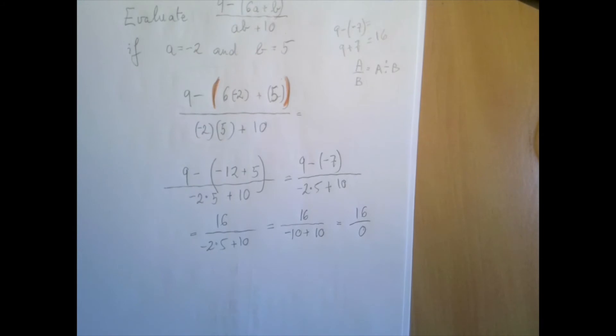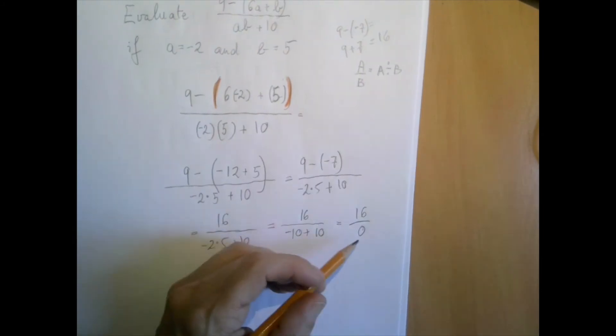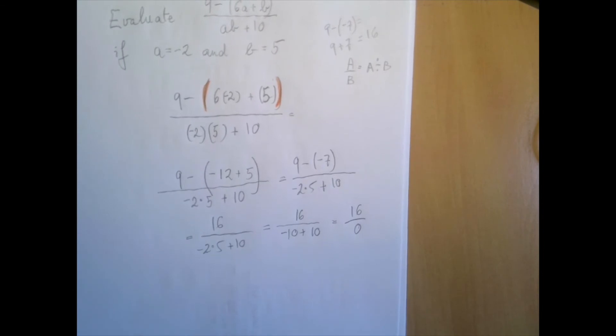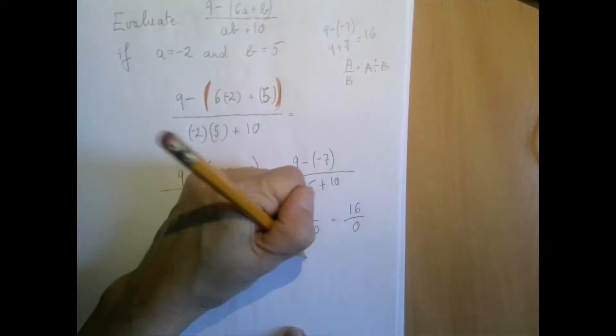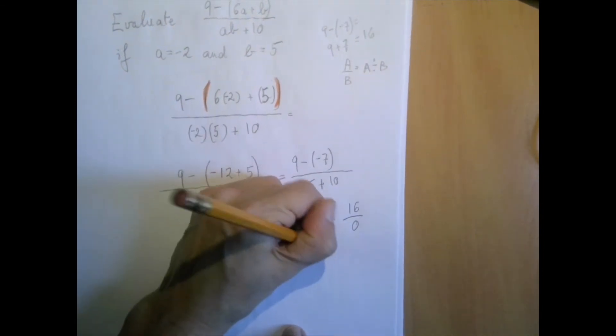Well, negative 10 plus 10 is 0. So we have 16 divided by 0. That is not allowed. It doesn't even matter what's on the top. As long as we're dividing by 0, the answer is always the same: undefined. We're done with the problem.